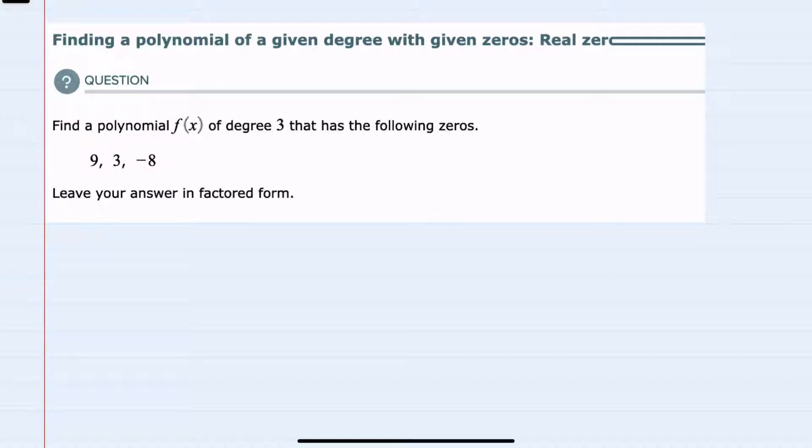We'll start by recalling that zeros occur when our function f of x equals 0. So when the function equals 0 we know that there are three values for x. We have x equals 9, x equals 3, or x equals negative 8.